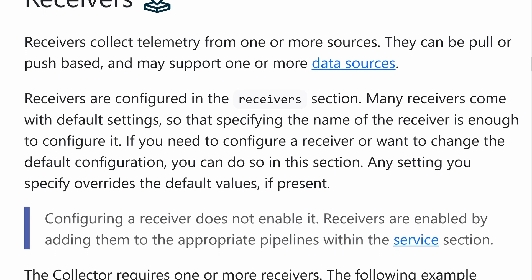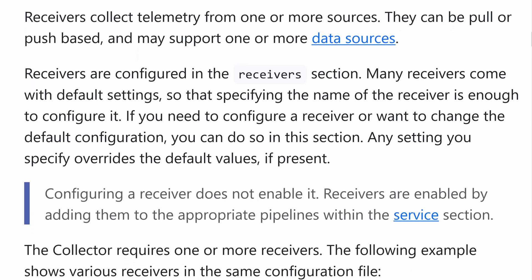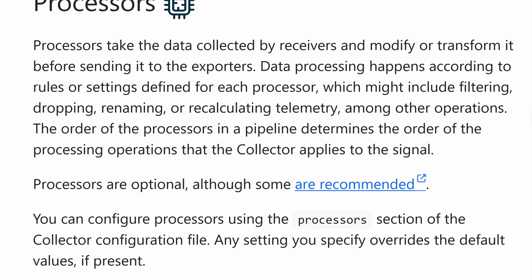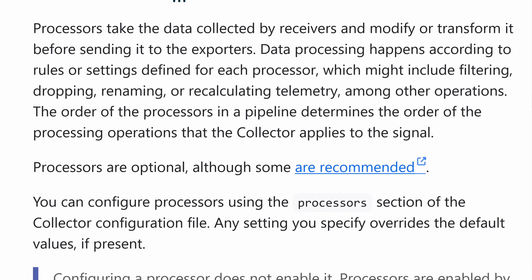Receivers are how the collector takes in data from your application. It's going to spin up some ports to listen on, and you'll send data to those ports from your services. Each port might have a different protocol — TCP, HTTP, or gRPC. The receiver is basically the entry point to the greater collector pipeline. Once the collector receives some data, it then passes it to processors.